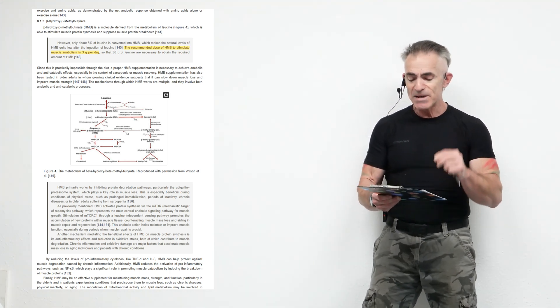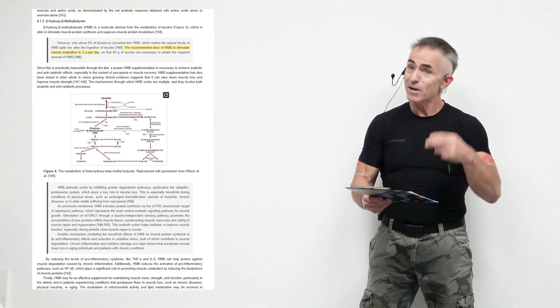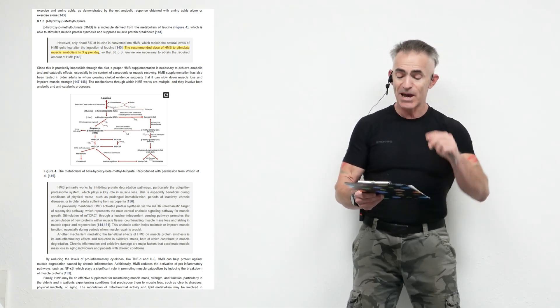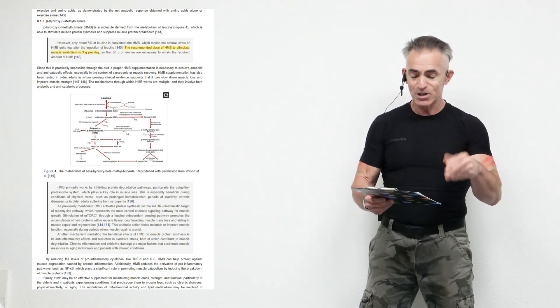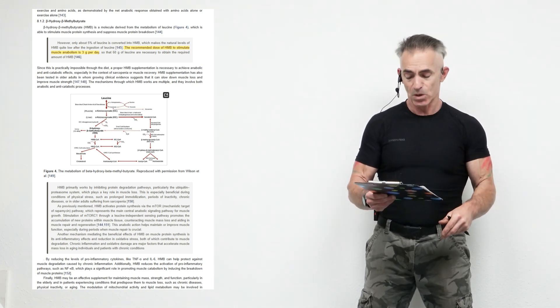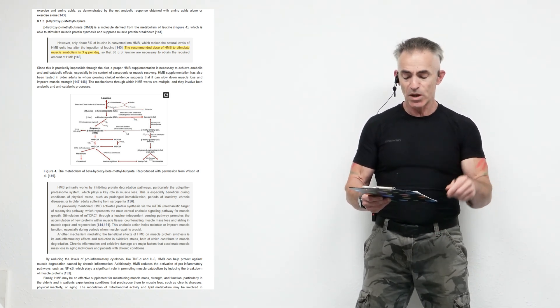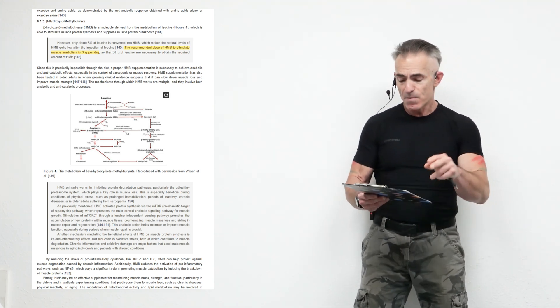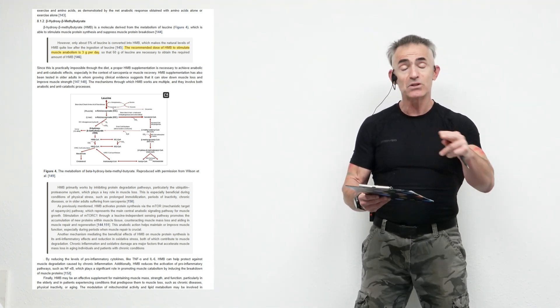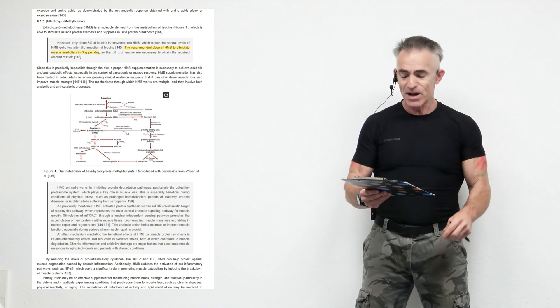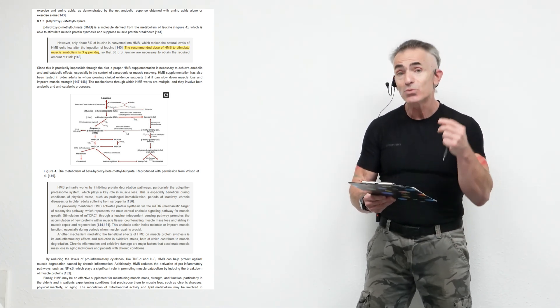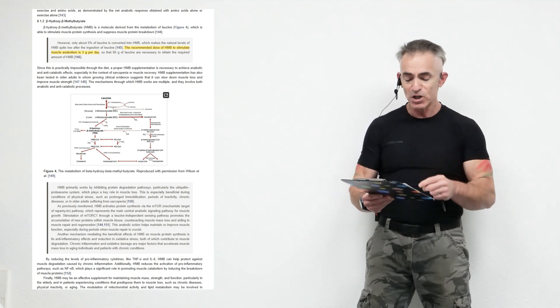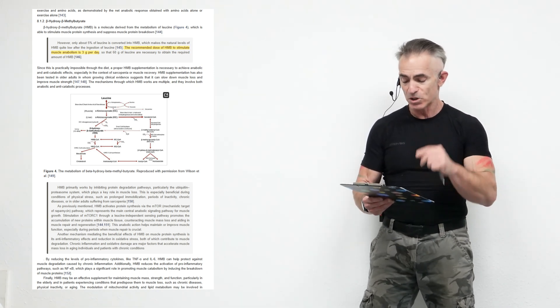As previously mentioned, HMB activates protein synthesis via the mTOR mechanism and rapamycin pathway, which represents the main central anabolic signaling pathway for muscle growth. Stimulation of the mTORC1 through leucine-independent sensing pathways promotes the accumulation of new proteins within muscle tissue, counteracting muscle mass loss and aiding muscle repair and regeneration. This anabolic action helps maintain or improve muscle function, especially during periods when muscle repair is crucial.